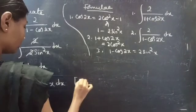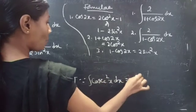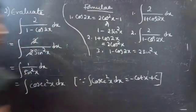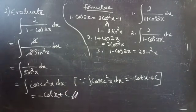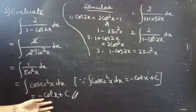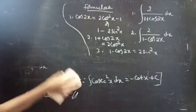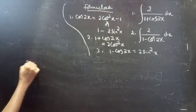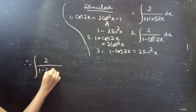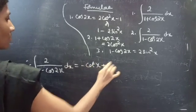Since integral of cosecant square x dx equals to minus cot x plus c, this equals to minus cot x plus c. Therefore, integral 2 by 1 minus cos 2x dx equals to minus cot x plus c.